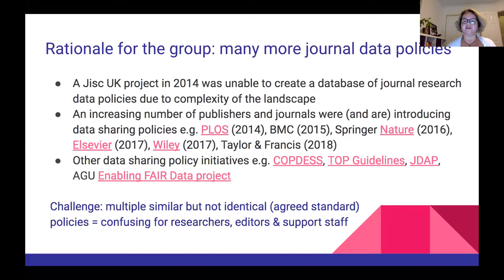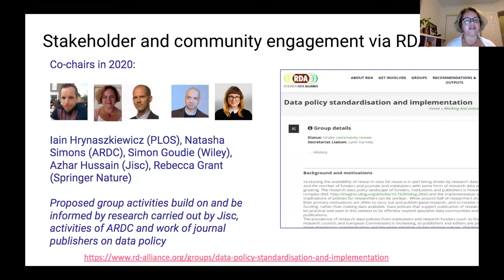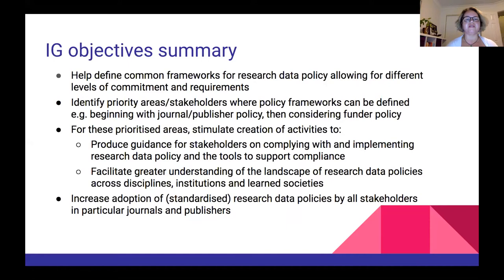The rationale for the group was that not just journal data policies but many funder policies as well are differently aligned — some mandate data types, some encourage, some mandate differently. A GSC UK project back in 2014 was unable to create a database of journal data policies because they're all so different and lack common elements, yet we saw massive growth in the number of journal data policies. Our objectives were to define common frameworks, identify priority stakeholder areas, and produce guidance for standardising journal data policies, starting with journal policies and going broader, to increase adoption in a standardised way.